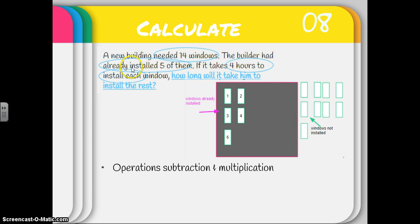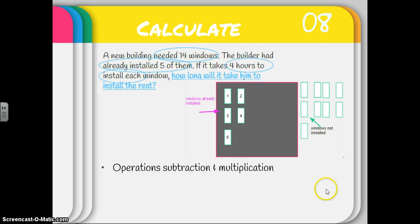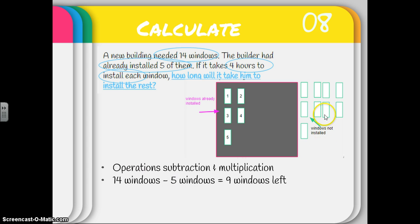Here's the problem that I marked up and here's my picture. I think what I'm going to do for a strategy — in this case I already have a picture to help me, so I'm going to go right for an operation. But I'm going to need both subtraction and multiplication. I know that there was a total of 14 windows, and I already installed five. So 14 minus five windows leaves me with nine windows that are left, and that matches my picture.